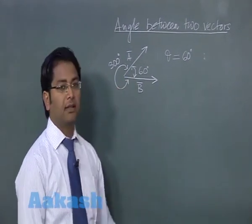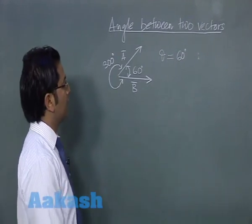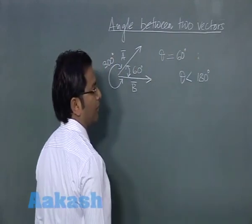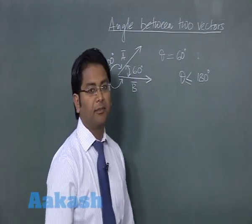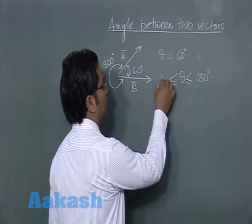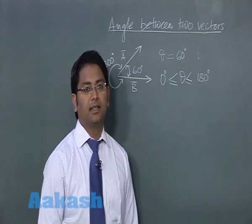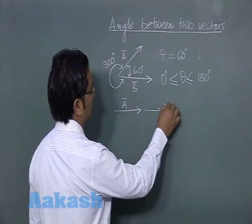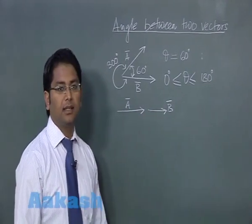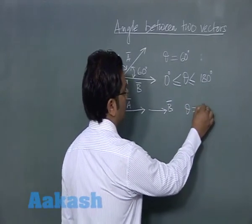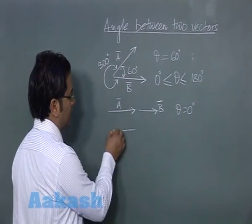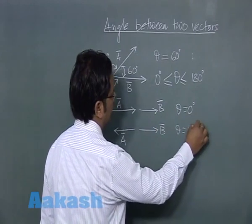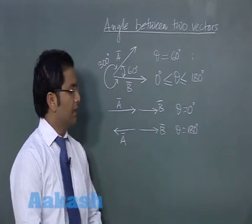We always take the smaller angle between two vectors, so theta will always be less than or equal to 180 degrees and greater than or equal to 0 degrees. For example, if vector A and vector B are parallel, the angle between them is 0 degrees. If one vector points one way and the other points the opposite way, the angle is 180 degrees.